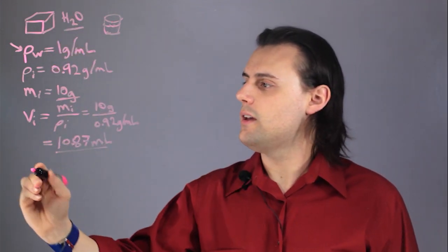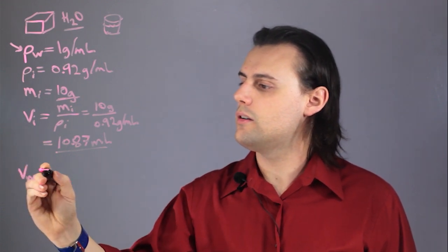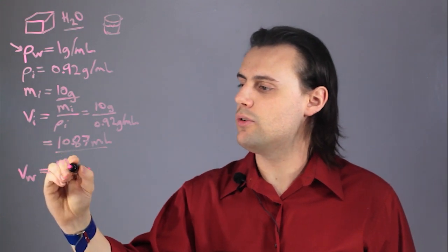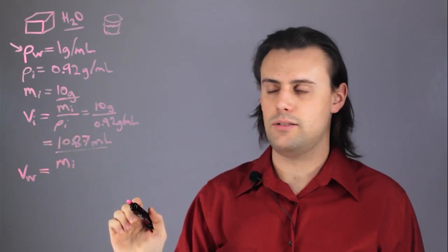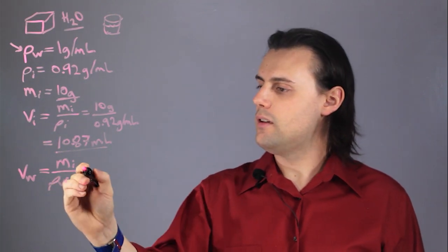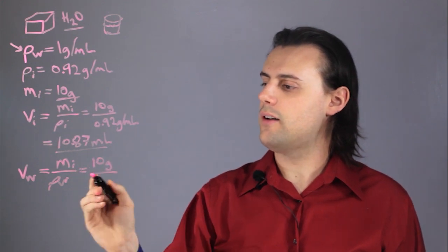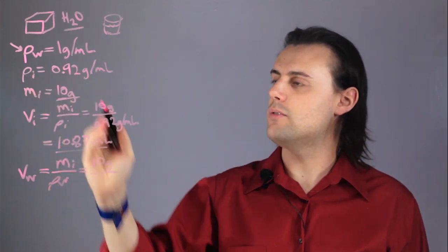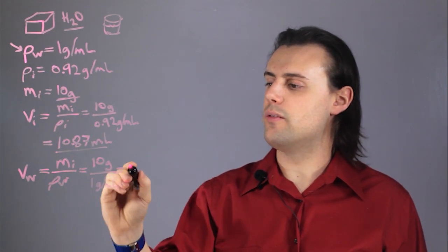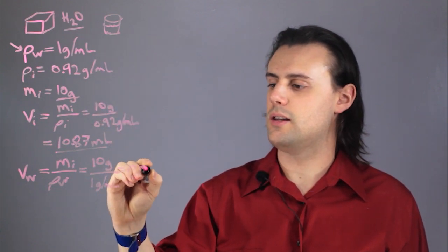So, if I keep it in this container, then the volume that the water will inhabit in this glass is going to be equal to the same mass as the ice that I started with, divided by the density of the water. So, this is going to be equal to 10 grams, and now I have to divide by ρw, which is 1 gram per milliliter. So, I end up with a volume of water of just 10 milliliters.